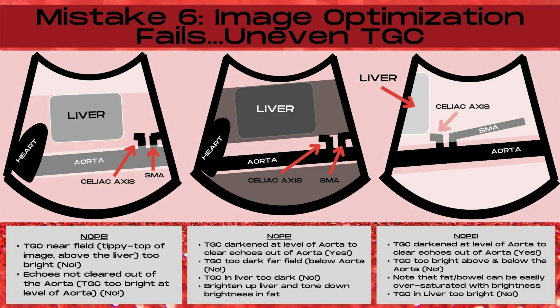Mistake Number 6 when imaging the aorta is what I like to call image optimization fails. These are things not to do when optimizing your image. The first one to talk about is uneven TGC.